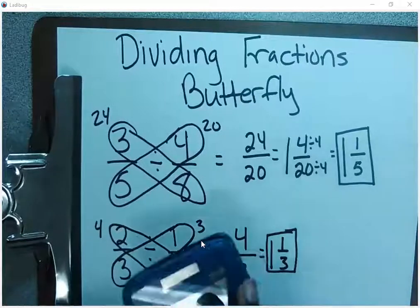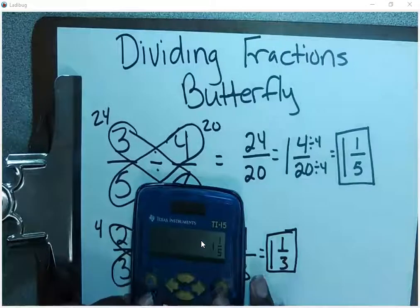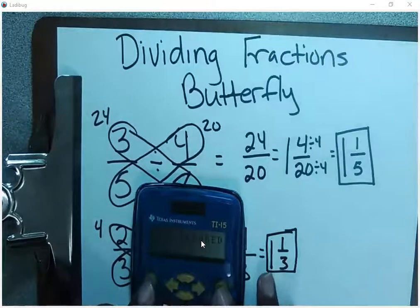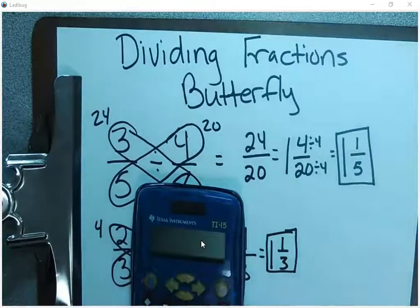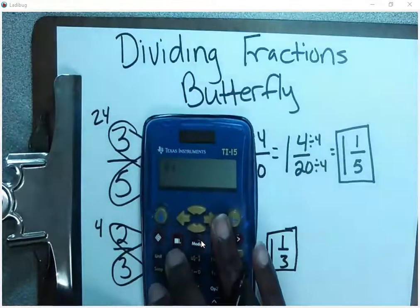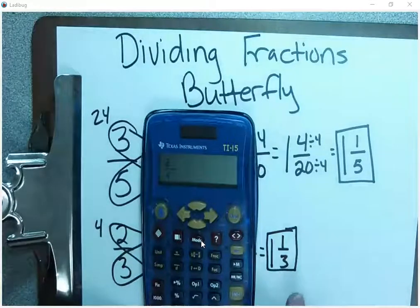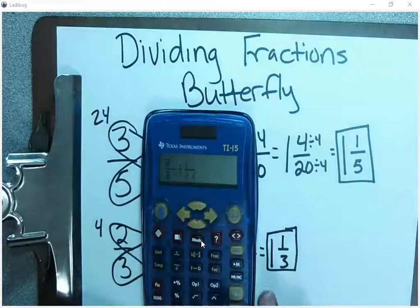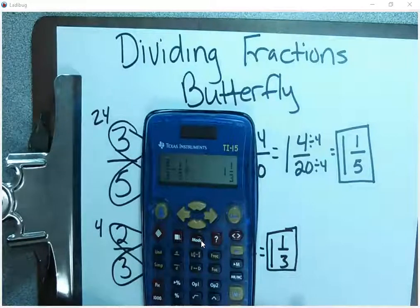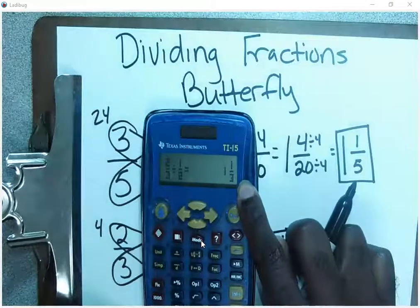And like always, we're going to check our work. Always remember to clear your memory and go to two numerator three divided by one numerator two. Hit enter. And once again, you get one and one-third.